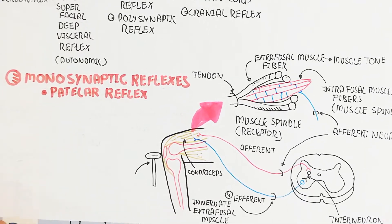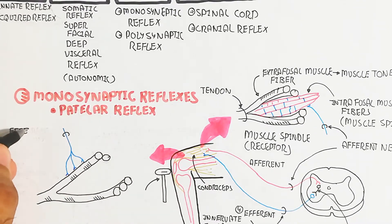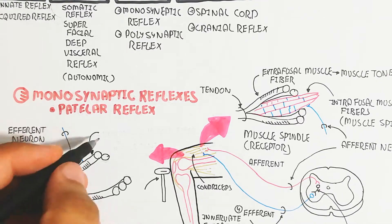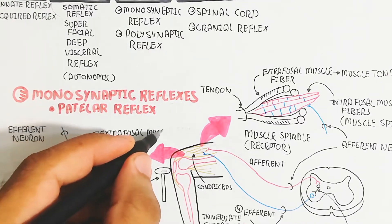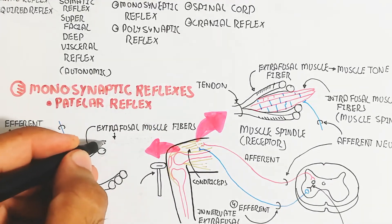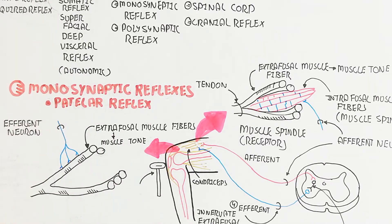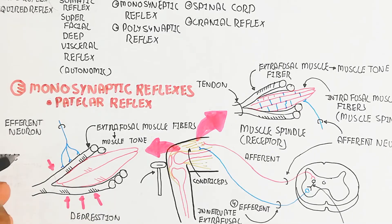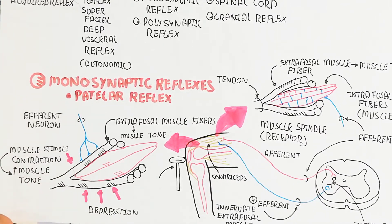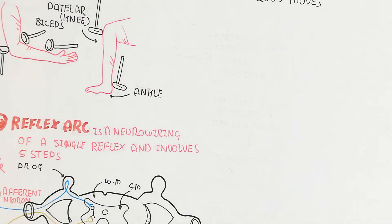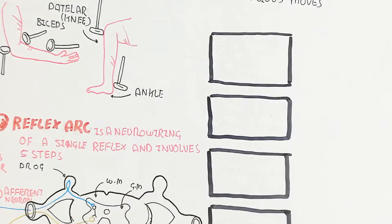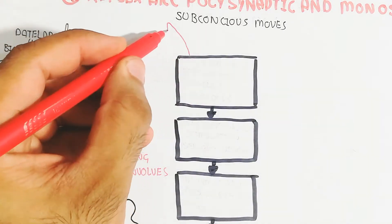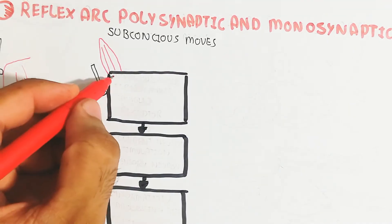The motor neuron forms a neuromuscular junction with the quadriceps, leading to contraction and upward movement of the leg. The extrafusal muscle fibers are responsible for muscle tone. The efferent (motor) neuron directly attaches via the neuromuscular junction to stimulate muscle contraction, producing muscle tone, and this leads to depression — the extrafusal muscle fiber stimulated by the efferent neuron.